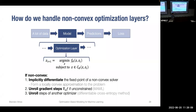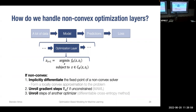In the non-convex setting, we can continue applying implicit differentiation on the fixed points of a non-convex solver. This can work when the solver hits fixed points, but it can be tricky since fixed points aren't always guaranteed and the non-convex setting lacks something as consistent as the KKT system. Another approach is MAML, which performs a kind of differential optimization in an unconstrained setting by unrolling gradient steps, or unrolling the steps of another optimizer.